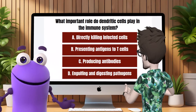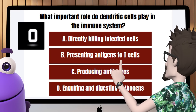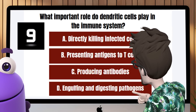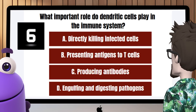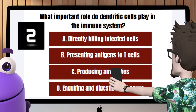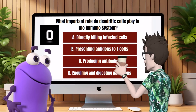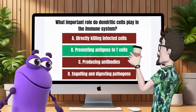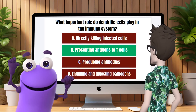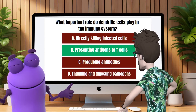Question 9: What important role do dendritic cells play in the immune system? B, presenting antigens to T cells. That's correct. Dendritic cells process and present antigens to T cells, initiating an adaptive immune response.